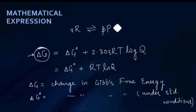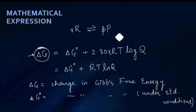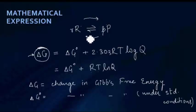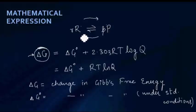Delta G here is the amount of useful work we can obtain from this reversible reaction when reactants change to products. Another thing about delta G: if delta G is positive for the forward reaction, it will be negative for the backward reaction, and vice versa. Delta G for the forward reaction is simply the negative of delta G for the backward reaction — the magnitude will be the same.